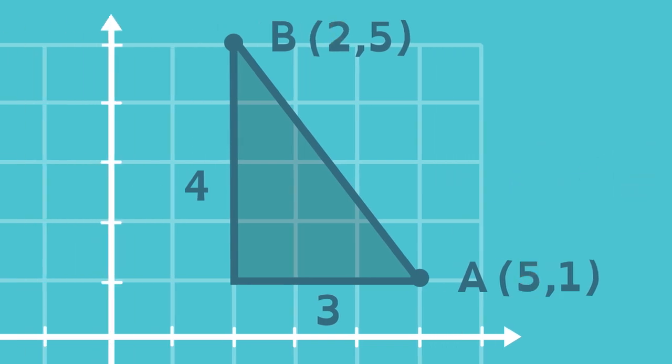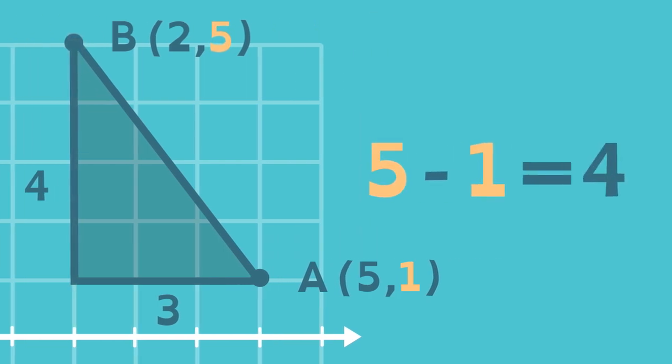For the vertical leg, take the y distance of a and subtract the y distance of b. This is equivalent to subtracting the y coordinates of a and b.